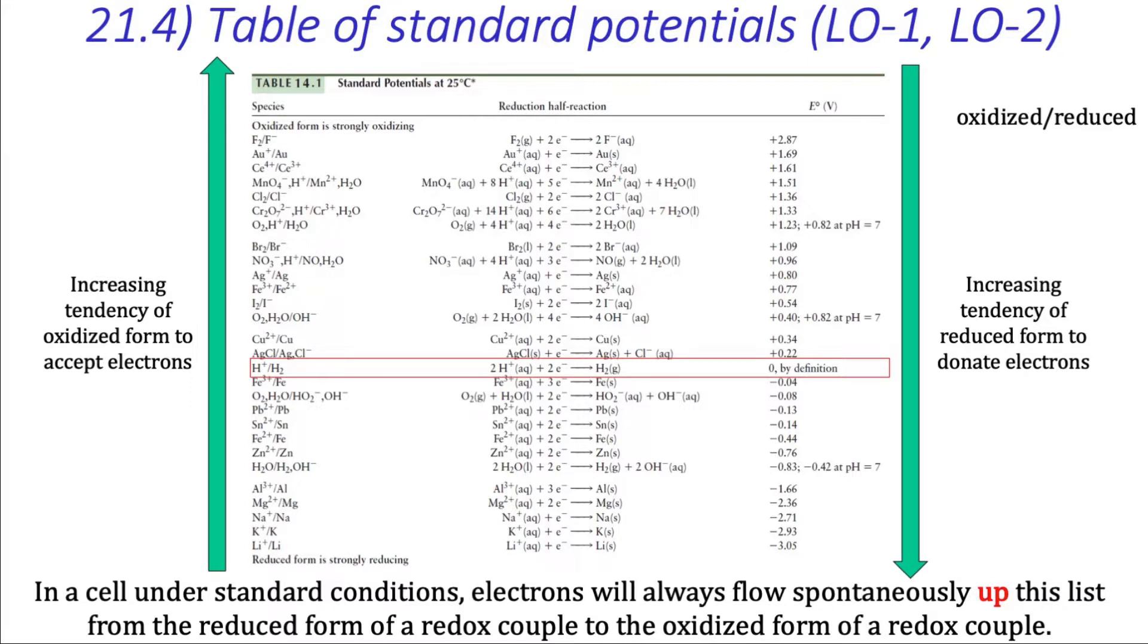which is to combine two standard half-cell reduction potentials, such as those shown in this table, to calculate the standard cell potential for a galvanic cell.